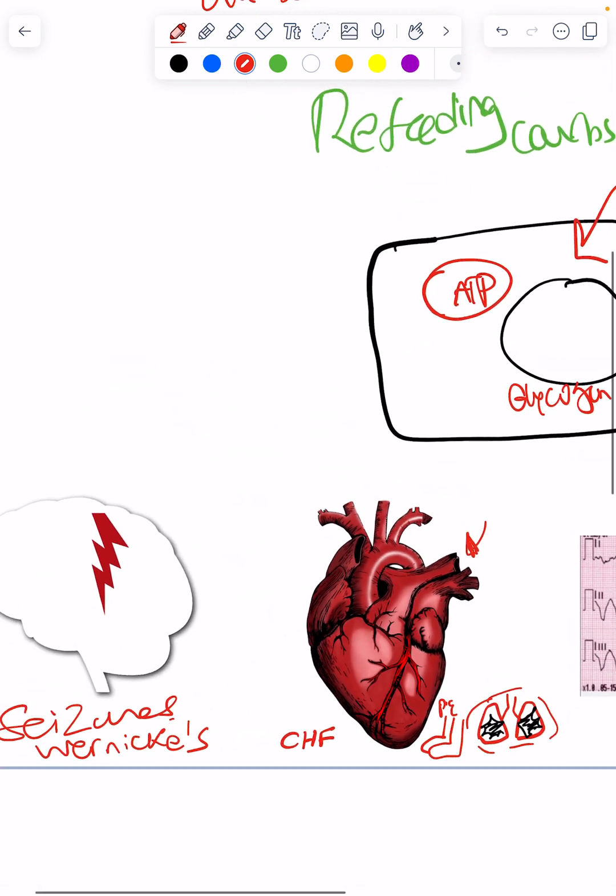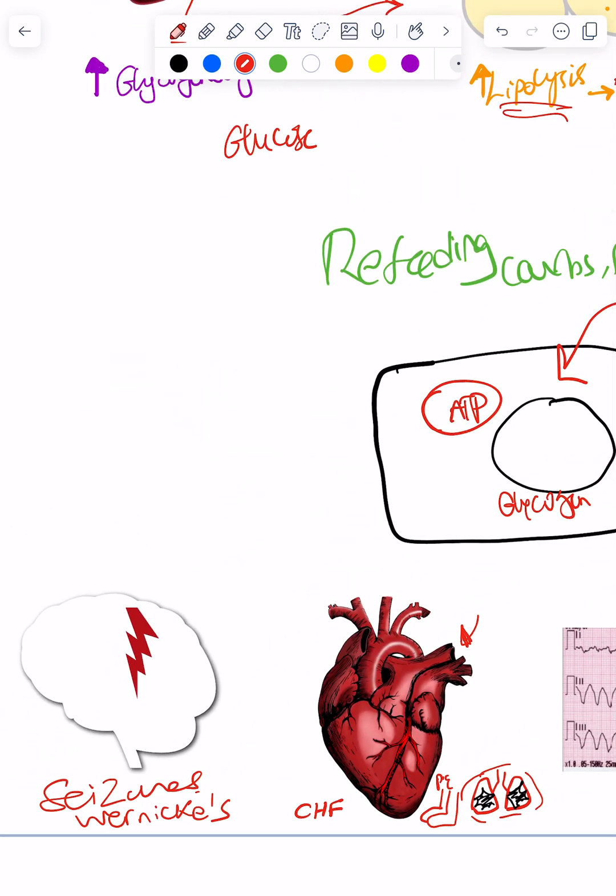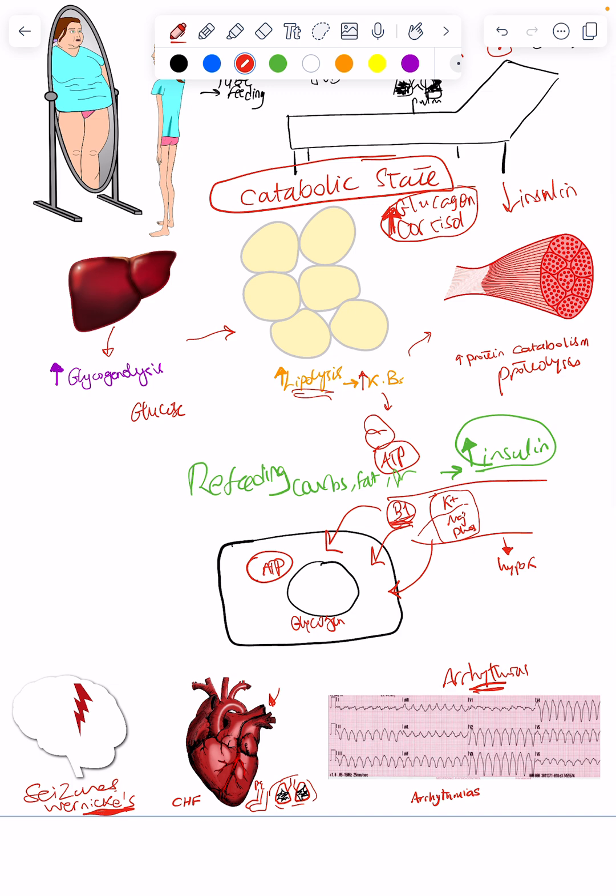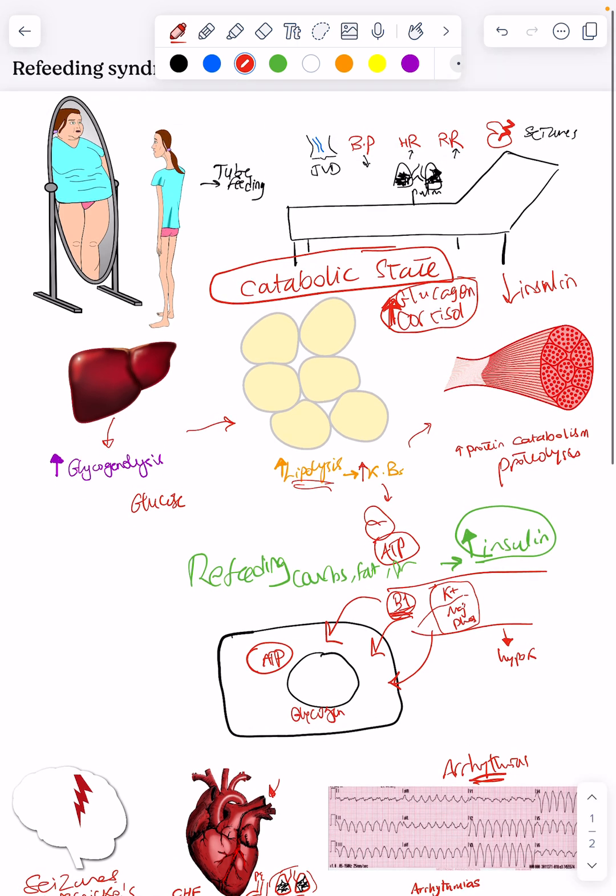And because of depletion of B1 vitamin, this girl can get Wernicke's encephalopathy. She can get seizures because of the depletion of all the electrolytes as well. And so that explains the deterioration seen with refeeding syndrome.